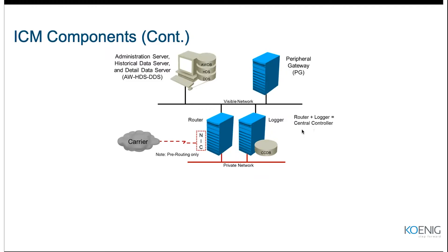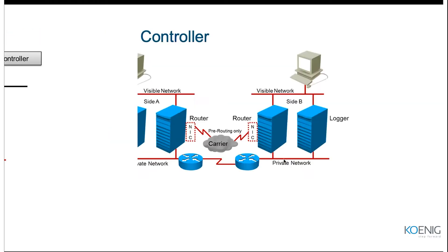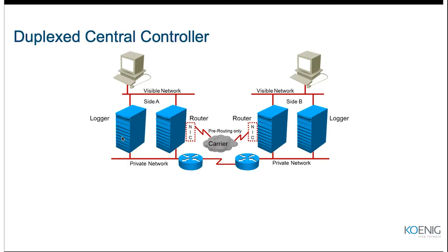To summarize the ICM components: router, logger, NIC, administration server, HDS, DDS, and PG. These components can be deployed as a simplex environment — just one instance of each component — or as a duplex environment, where a second side is deployed with the same components working as high available to each other.